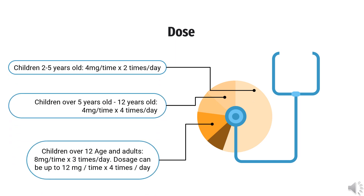Dose. According to the manufacturer's recommendations, the dosage of bromexine is: Children 2 to 5 years old — 4 mg per time, 2 times per day. Children over 5 years old to 12 years old — 4 mg per time, 4 times per day. Children over 12 and adults — 8 mg per time, 3 times per day. Dosage can be up to 12 mg per time, 4 times per day, but it is necessary to consult a doctor.